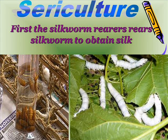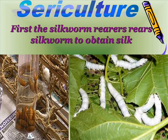First, the silkworm rearers rear silkworms to obtain silk. The process of obtaining silk involves: Rearing, Reeling, Dyeing, and Spinning.